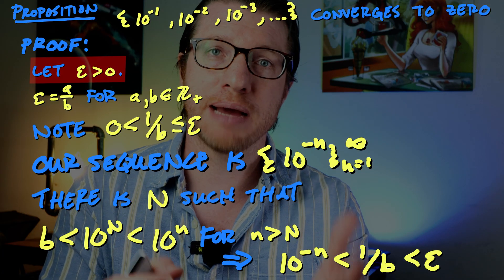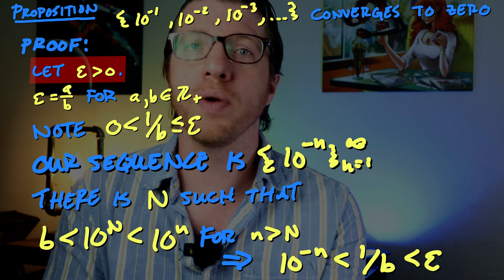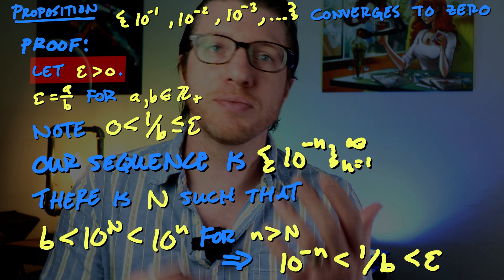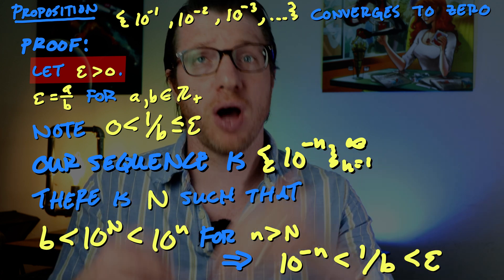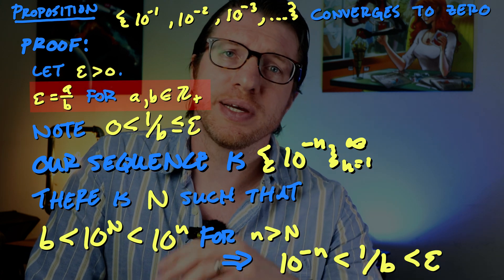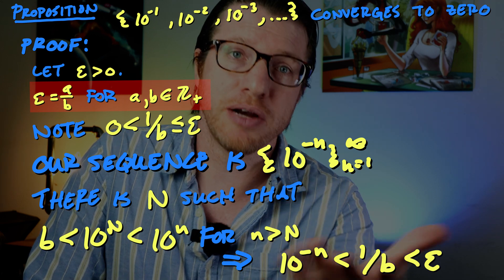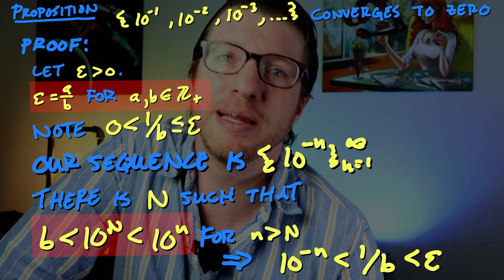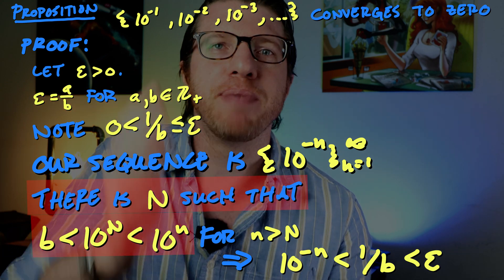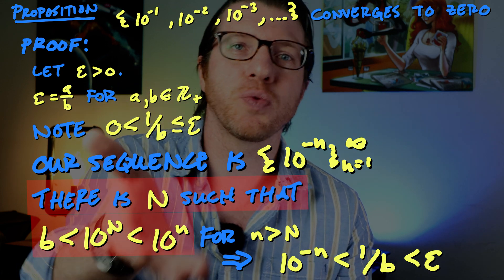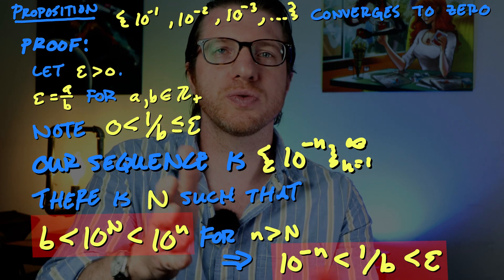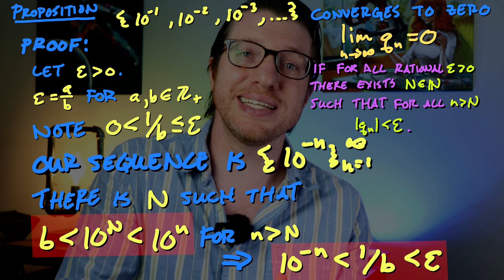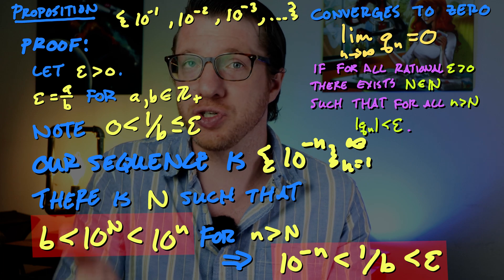Let's chunk that proof: we set epsilon and expressed it as a ratio to easily find something bigger than the denominator b. Then we invoked the Archimedean property — getting a power of 10 bigger than b — and flipping it gives something underneath 1 over b. Then we matched the definition. That shows the difference between 1 and 0.999... goes to zero.